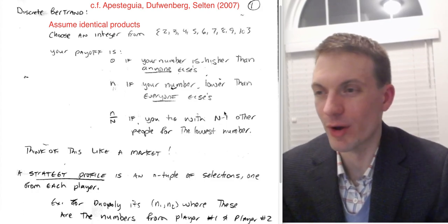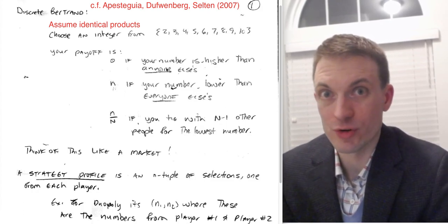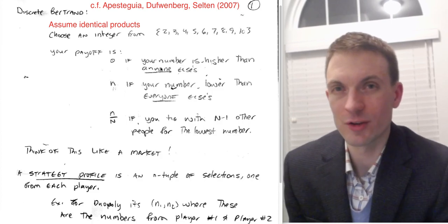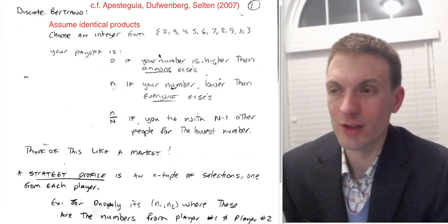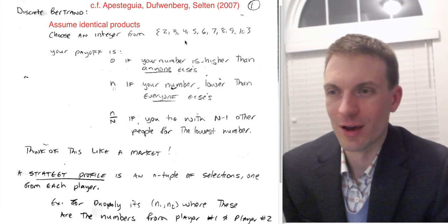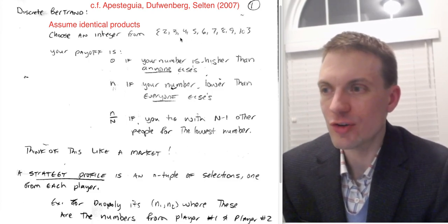Okay, hello and welcome everyone. In this video I'm going to talk about the discrete Bertrand model. This is an identical products Bertrand where firms are choosing prices or strategies from a set of integers, or just in general from a set of integers.